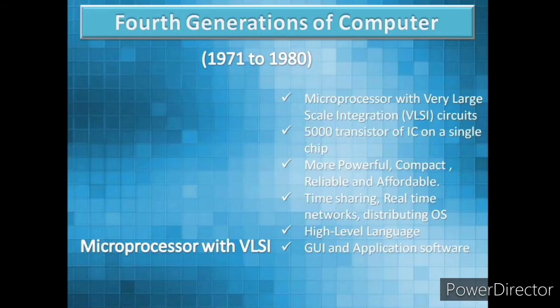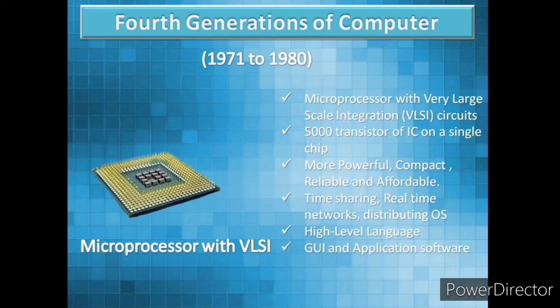The fourth generation of computers was from 1971 to 1980. Computers of the fourth generation used microprocessors with very large scale integration, or VLSI, circuits. A VLSI circuit had about 5000 transistors of IC on a single chip. Fourth generation computers became more powerful, reliable, and more affordable.